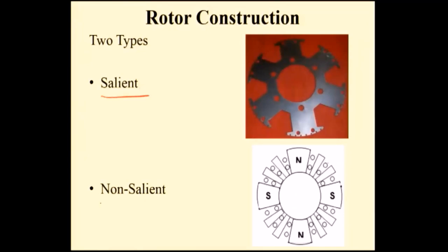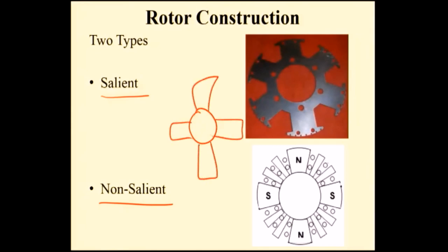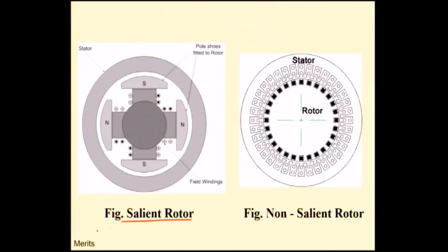There are two types of rotors: one is the salient pole rotor and the other is the non-salient pole rotor. Salient pole rotor means projected poles — the poles are projected in nature. Non-salient means smooth cylindrical. In the salient pole rotor, you can see the armature, the air gap, and the four-pole rotor with alternating poles N-S, N-S.